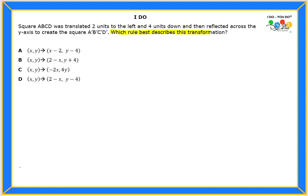So we're looking for the rule that describes a transformation that happened. Now if you notice there were two transformations that happened in this problem. Number one, it was translated two units to the left and four units down. That's the first thing that happens.